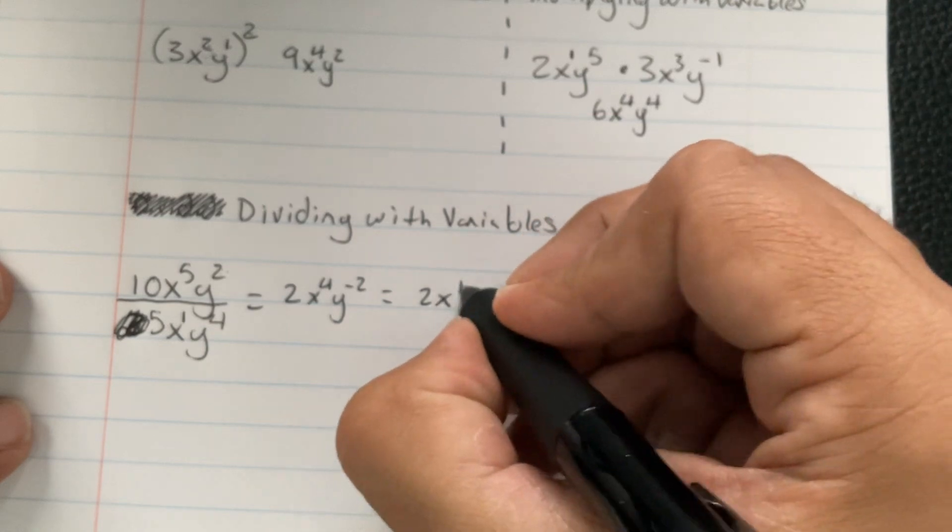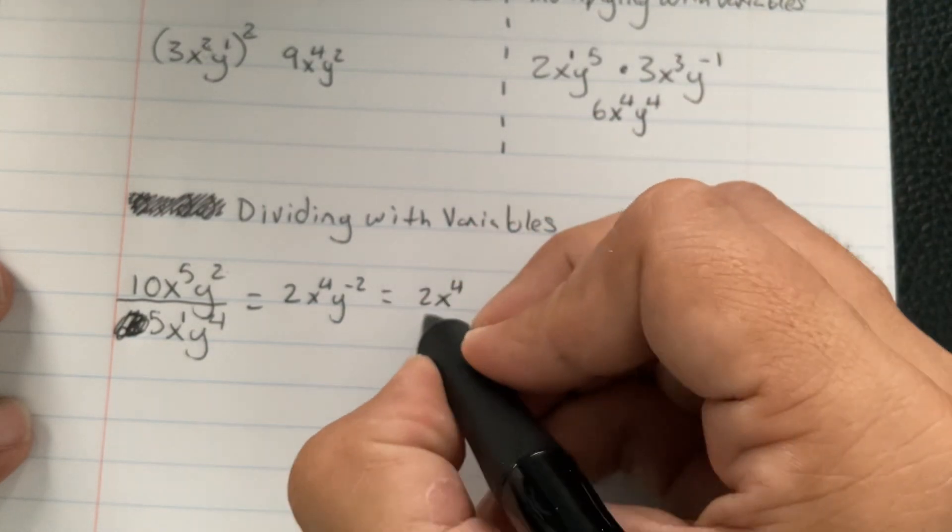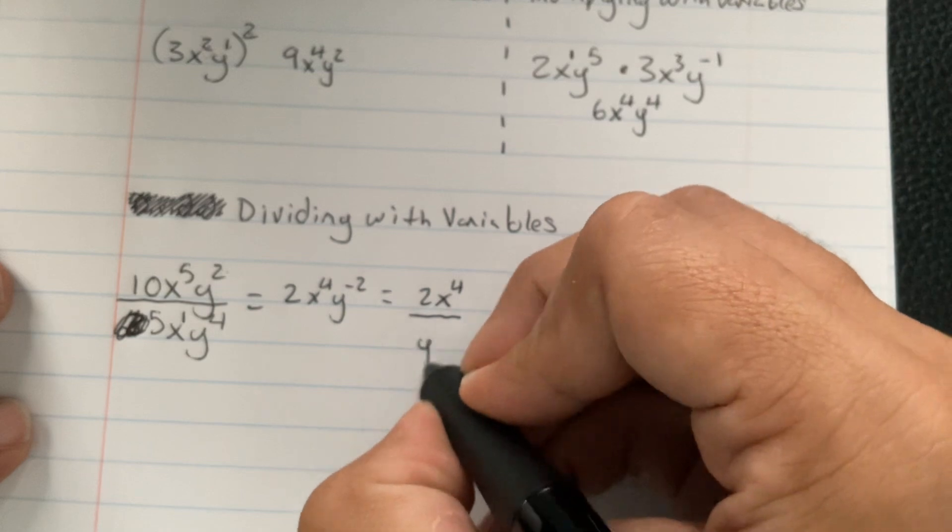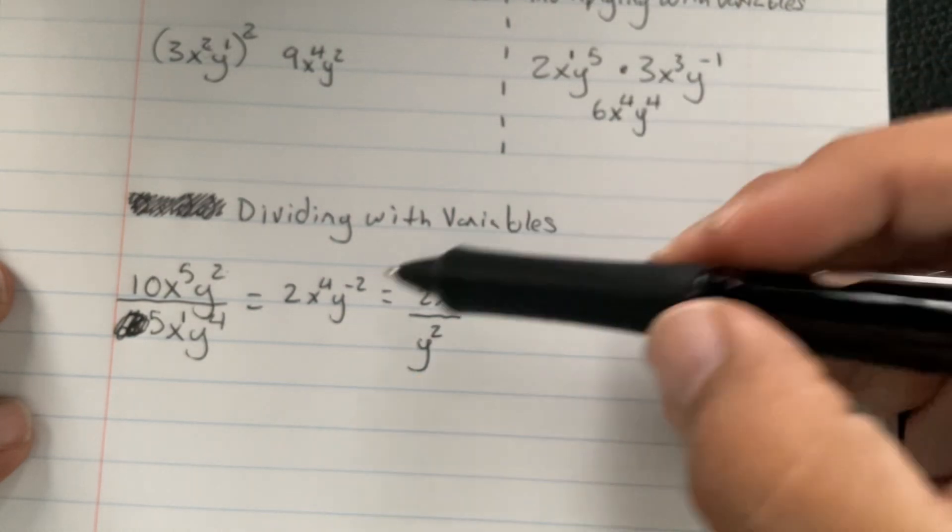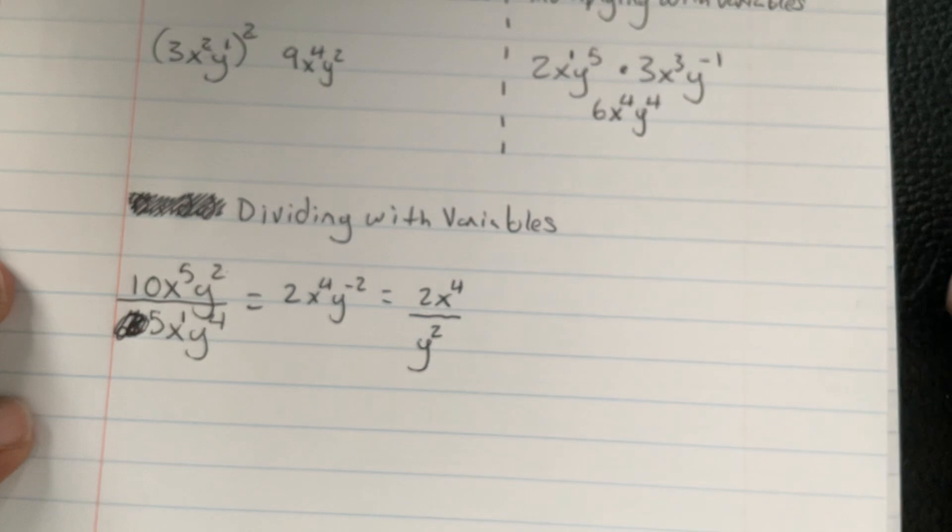2 and x to the 4th go on the top of the fraction. And y to the 2nd will go on the bottom of the fraction, because it's negative. And then there's my final answer.